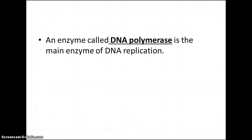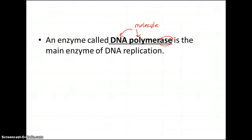An enzyme called DNA polymerase is the main enzyme — it's going to do all the work for us. This is easy to remember: 'ase' means it's an enzyme, and what does it do? It's going to make DNA polymers. A polymer just means a type of big molecule. So they actually named this so it makes sense: we have an enzyme that makes DNA polymers.